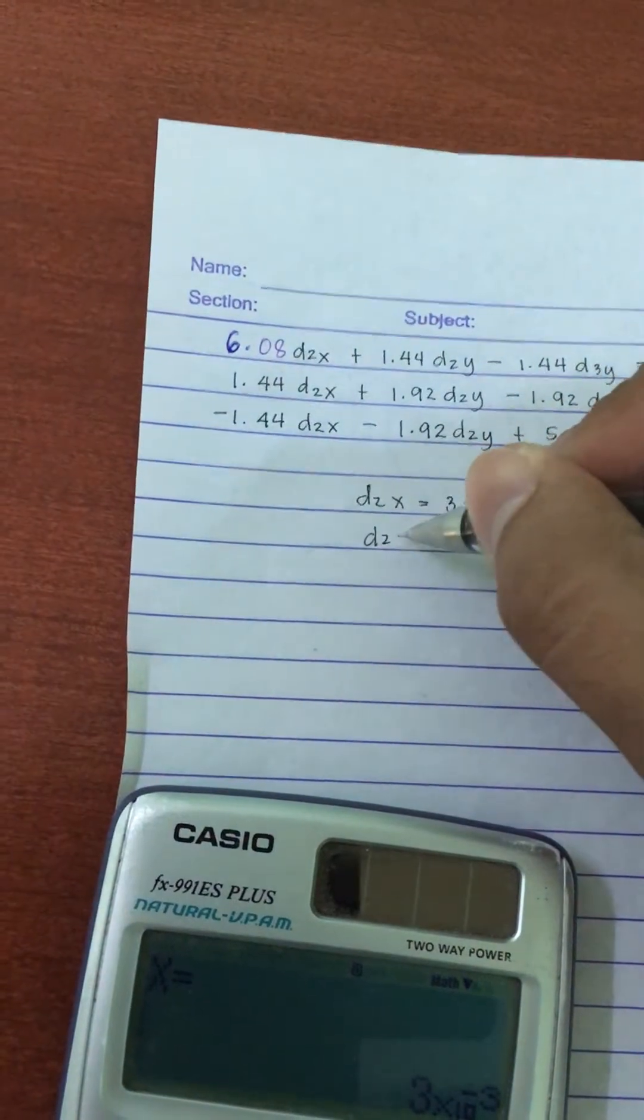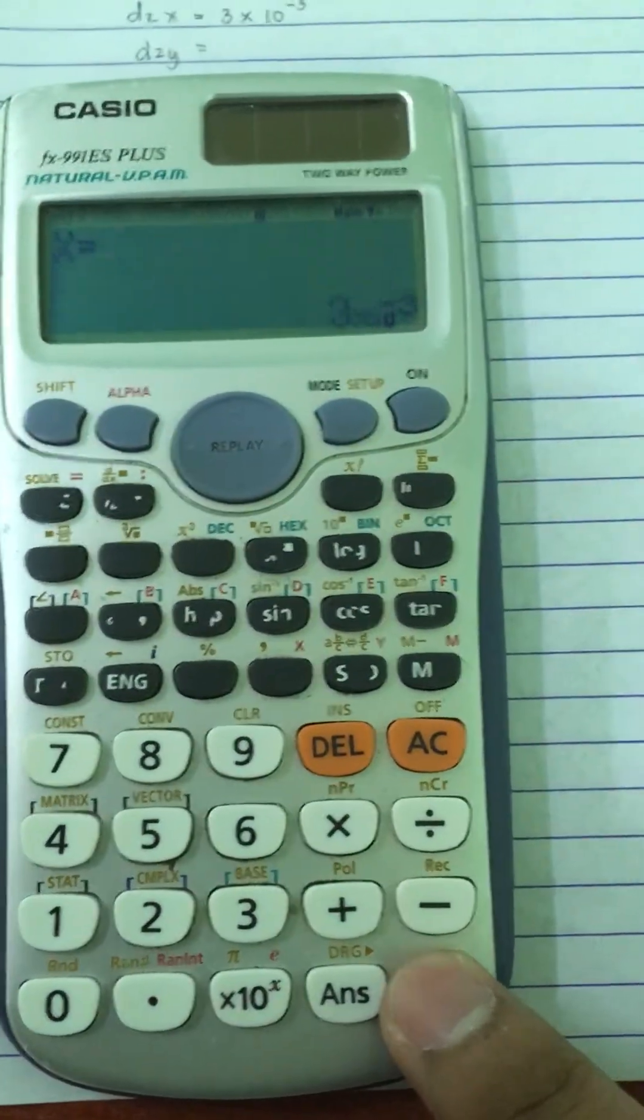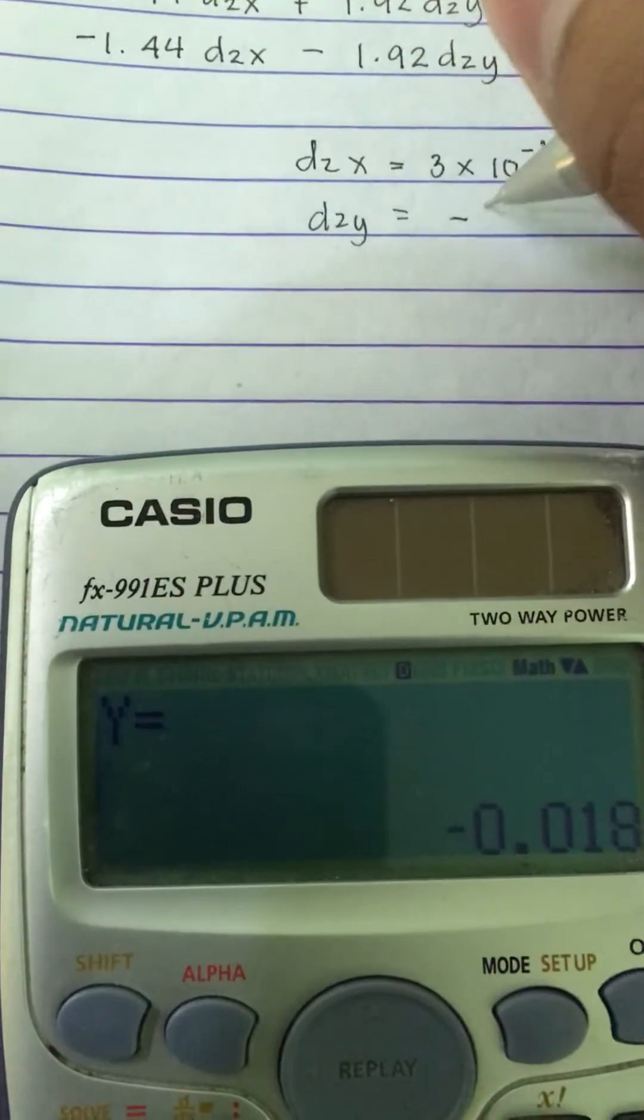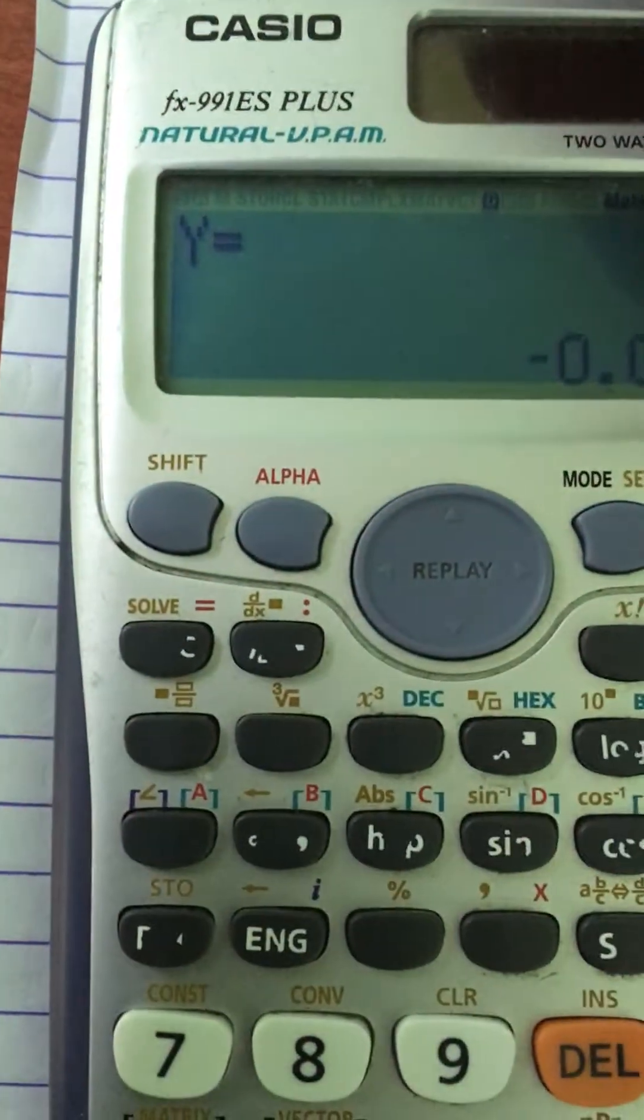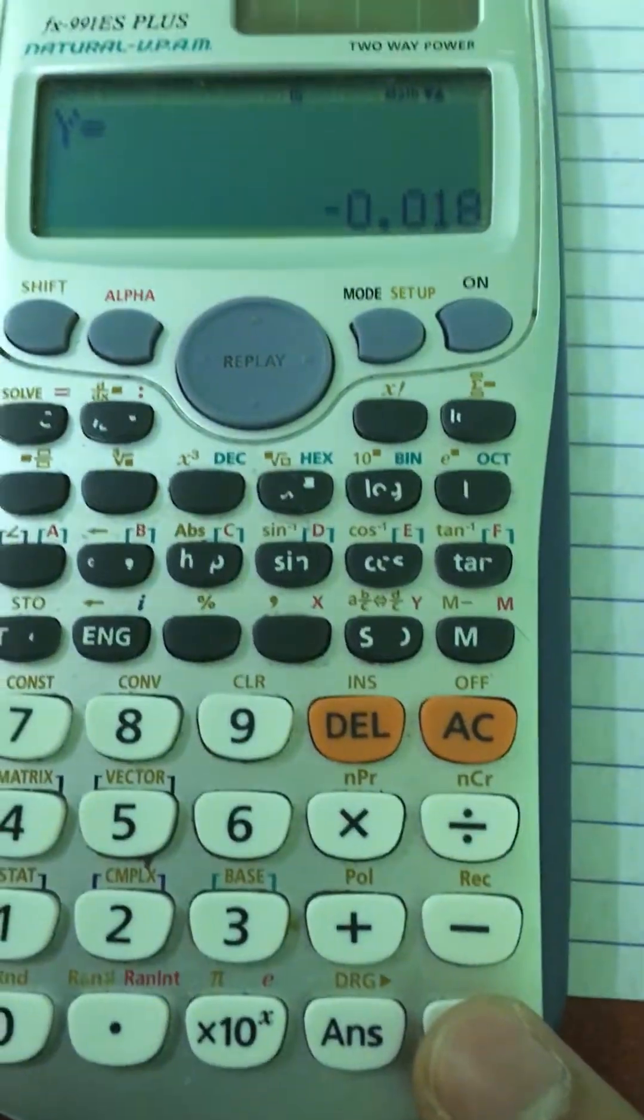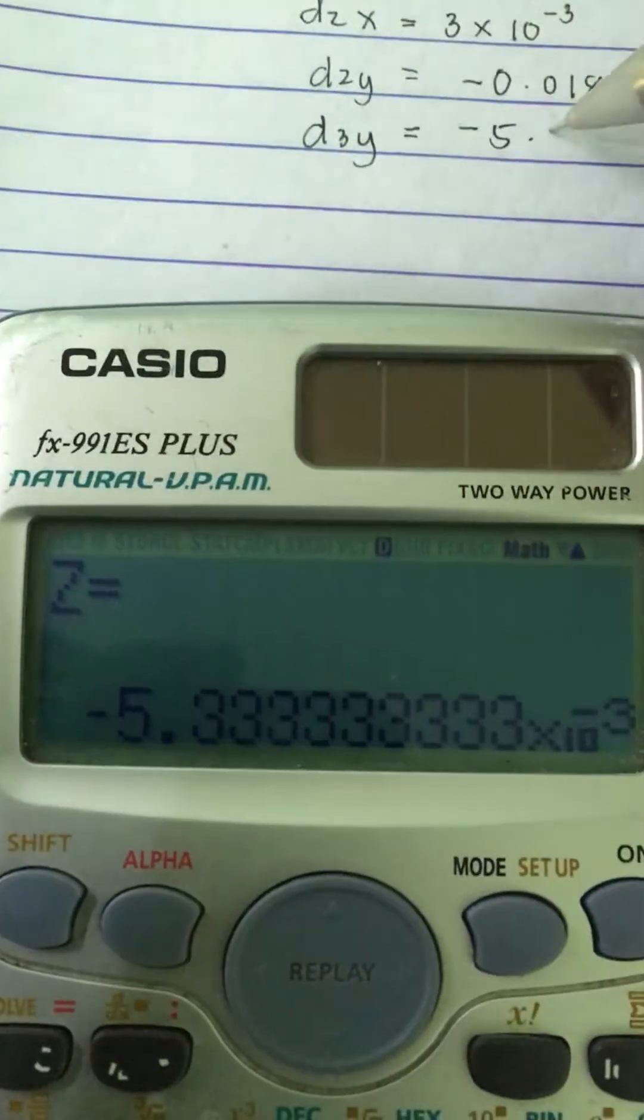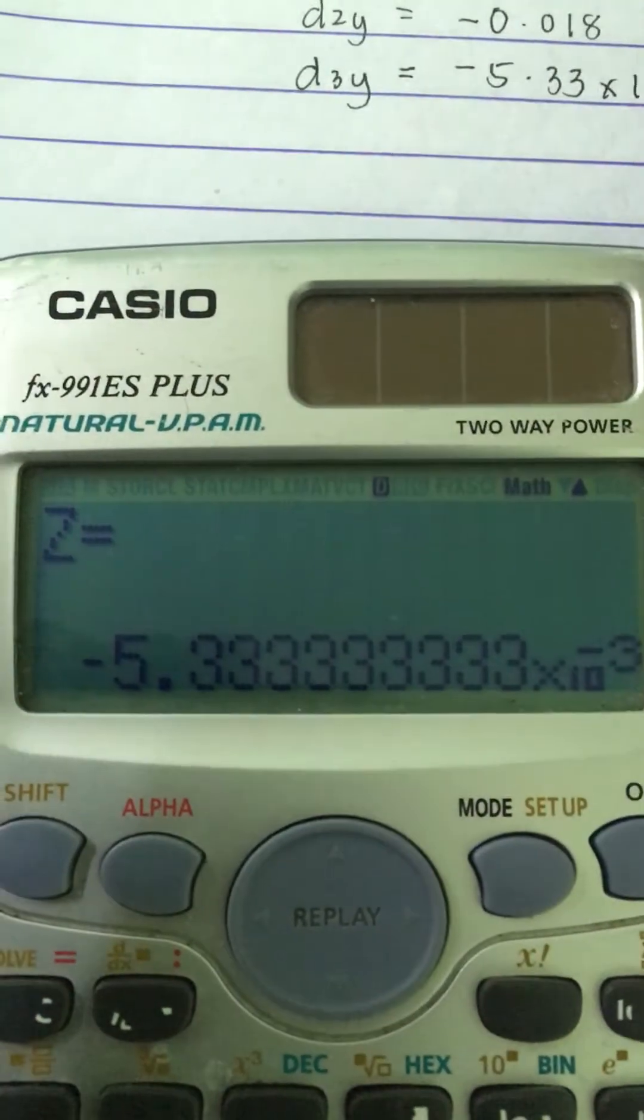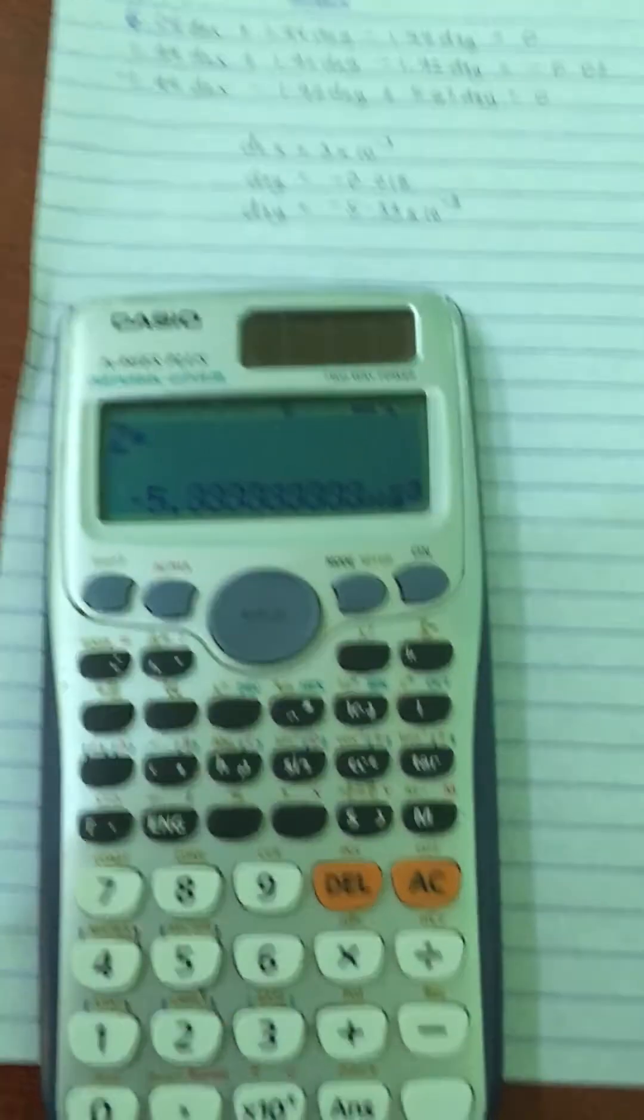We have D2y. In order for us to get the value of D2y, we just need to press equal sign again. So that's how I got the values of the three deformations.